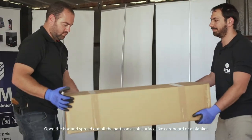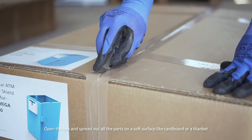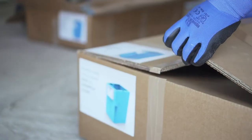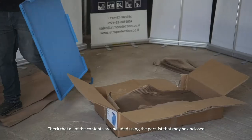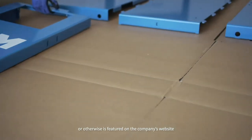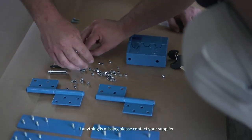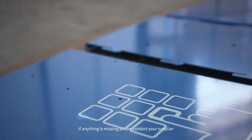Open the box and spread out all the parts on a soft surface like cardboard or a blanket. Check that all of the contents are included using the part list that may be enclosed or otherwise is featured on the company's website. If anything is missing please contact your supplier.